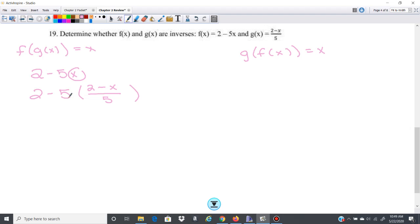Alright, well here then it looks like these 5s will cancel. And I'm going to have 2 minus 2 minus x. Distribute that negative, so 2 minus 2 plus x. 2 minus 2 is 0, you get x there.